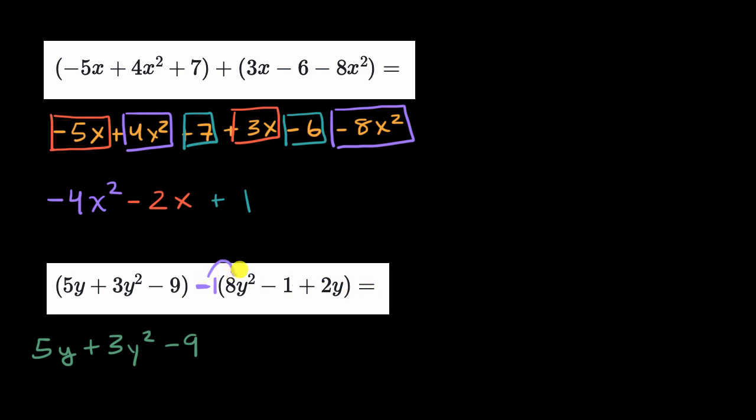Negative one times eight y squared is negative eight y squared. Negative one times negative one is positive one. Negative one times two y is negative two y.